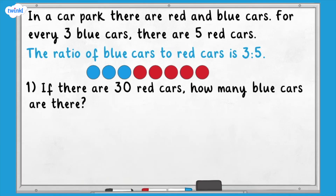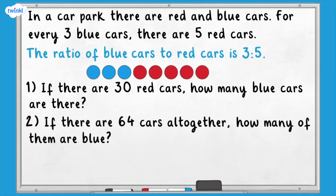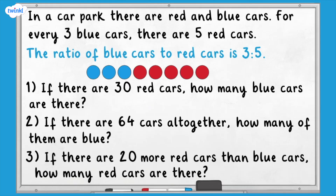Question one: if there are 30 red cars, how many blue cars are there? Question two: if there are 64 cars altogether, how many of them are blue? Question three: if there are 20 more red cars than blue cars, how many red cars are there? Pause here and have a go. If you get stuck, you might find it useful to go back and watch the examples from earlier in the video.